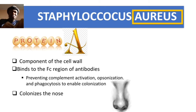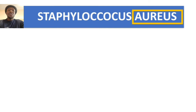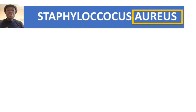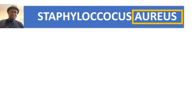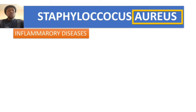The diseases caused by Staph aureus can be grouped into two categories: one, inflammatory diseases; and two, toxin-mediated diseases. Let's start with the inflammatory diseases.